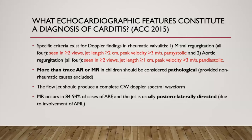Anything more than trace AR or MR in children should be considered pathological, provided non-rheumatic causes are excluded — such as congenital mitral stenosis or mitral valve prolapse. The flow jet should produce a complete Doppler profile. Specifically regarding mitral regurgitation in acute rheumatic fever, up to 84–94% of cases can have MR on initial or serial echos. Due to involvement of the anterior mitral leaflet, the jet is usually directed posterolaterally.